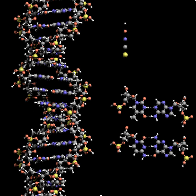Genomic DNA is tightly and orderly packed in the process called DNA condensation, to fit the small available volumes of the cell. In eukaryotes, DNA is located in the cell nucleus, with small amounts in mitochondria and chloroplasts. In prokaryotes, the DNA is held within an irregularly shaped body in the cytoplasm called the nucleoid. The genetic information in a genome is held within genes, and the complete set of this information in an organism is called its genotype.